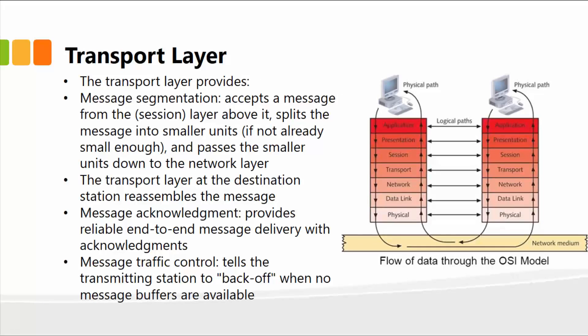Moving upwards towards the user, next layer is the transport layer. It provides message segmentation, accepts a message from the session layer above it, splits the message into smaller units, and passes the units down to the network layer. The transport layer at the destination station reassembles the message.